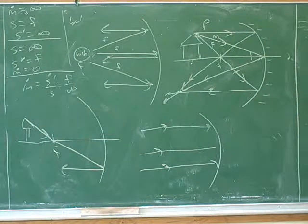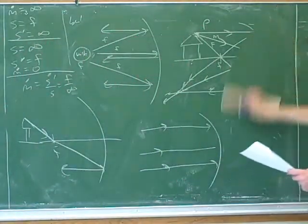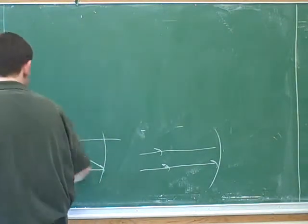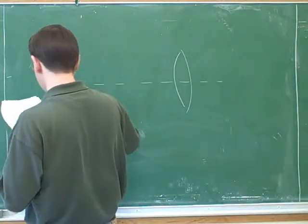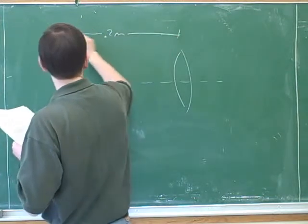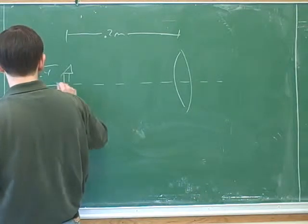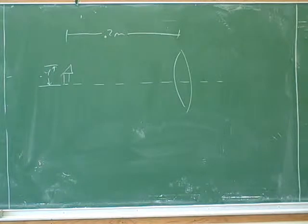So an object is 0.08 meters high, placed 0.2 meters from a converging lens. If the distance from the image to the lens is 0.4, so S prime is 0.4 meters, what is the height of the image? Well, that's not bad. Because the S prime, negative S prime over S equals H prime over H.